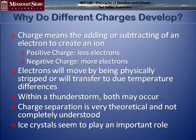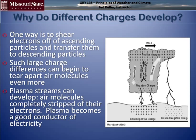When you have negative charge, you have more electrons. When you have positive charge, you have fewer electrons. Electrons will move by being physically stripped. Charge can also be transferred due to temperature differences, even phase changes between liquid and ice. In thunderstorms, all that's going on — it's highly theoretical, not completely understood. You can also move charge around by shearing electrons off of ascending particles and transferring them to descending particles.